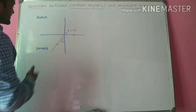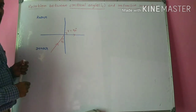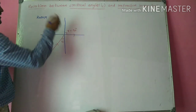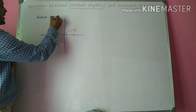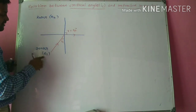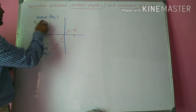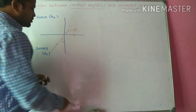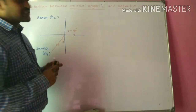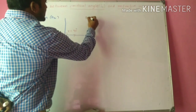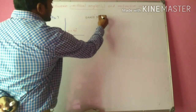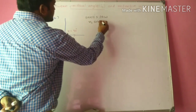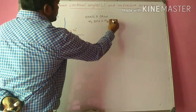The refractive index of the denser medium let us say is N1, and the refractive index of the rarer medium is N2. Now, according to Snell's law — which we have already discussed — Snell's law states that N1 sin i is equal to N2 sin r.